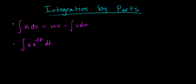What if you let u equal negative 3t? If you differentiate both sides, you see that du equals negative 3 dt. That doesn't help either — you don't really have any useful substitutions to knock out one of these functions of t. So u-substitution doesn't work in this case.